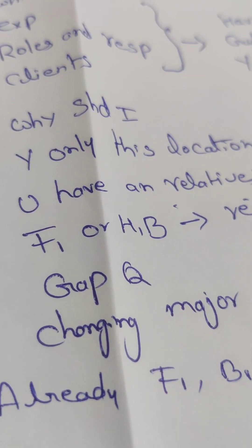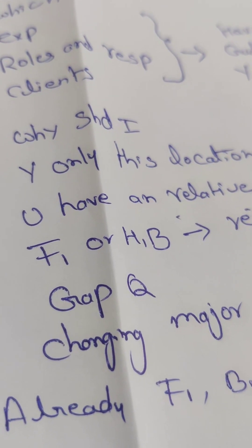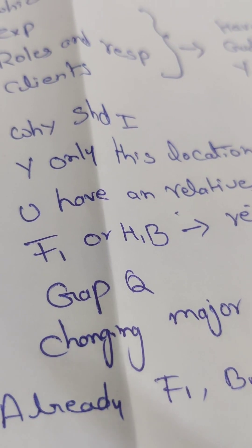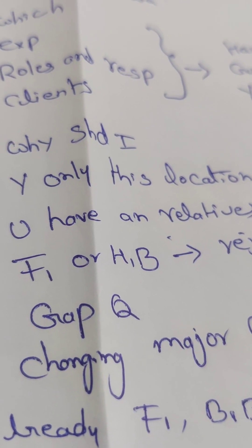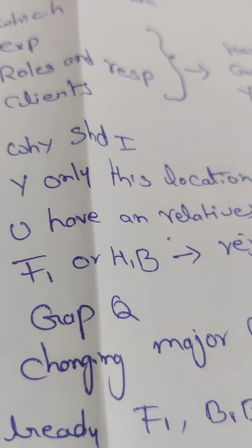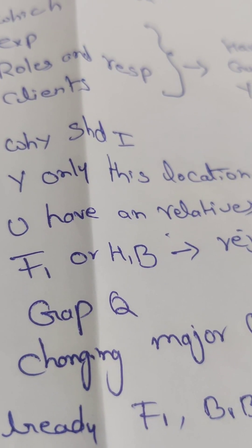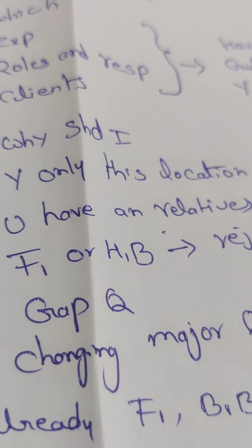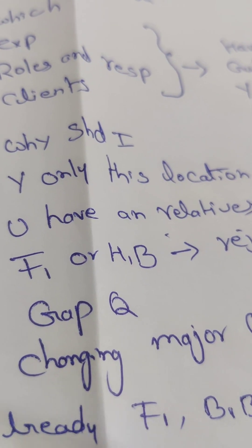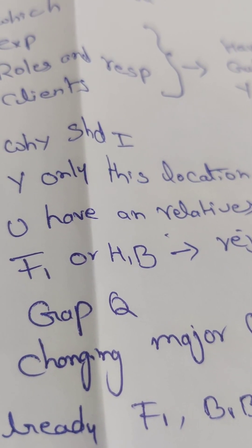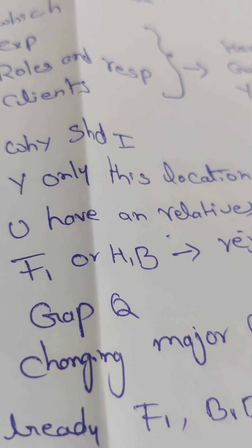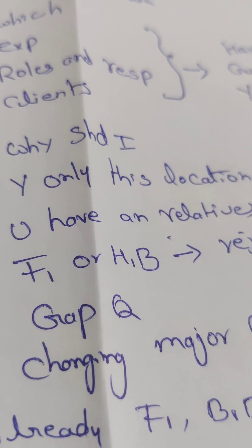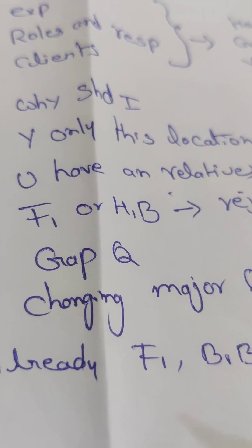They may ask whether you have any relatives in the US and if you have done any groundwork. They may ask whether you plan to stay at a relative's house. They may also ask if you have any siblings, seniors, or relatives in the US who are F1 or H1B holders, where that person is staying, and if you are moving to the same location as your F1 or H1B holder sibling. It is advisable to select a location that doesn't match where your F1 holder relative is already staying.